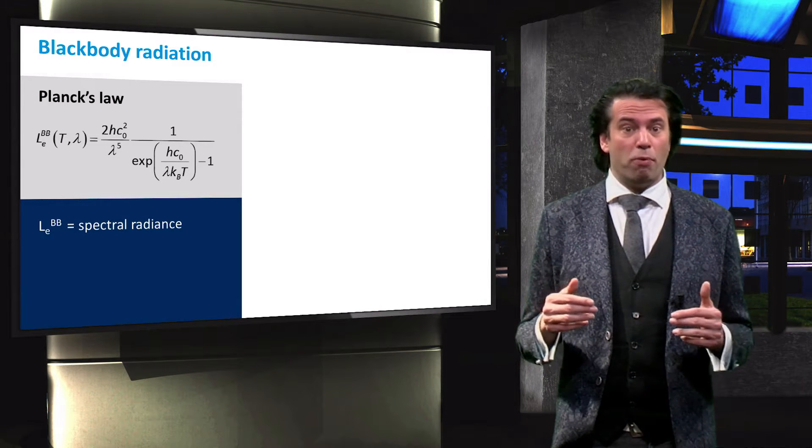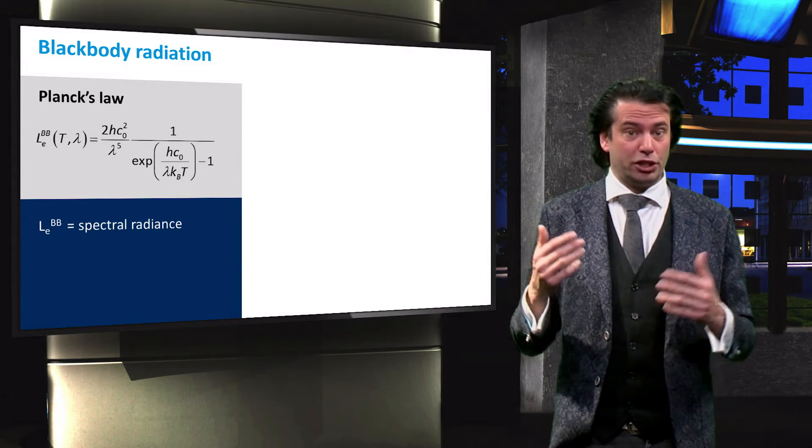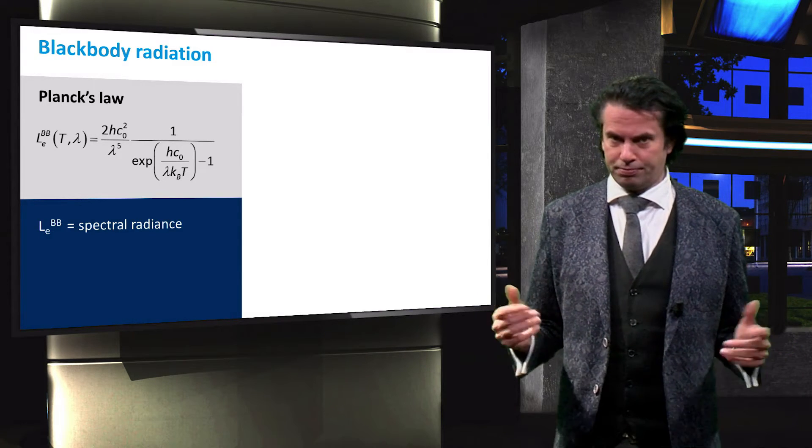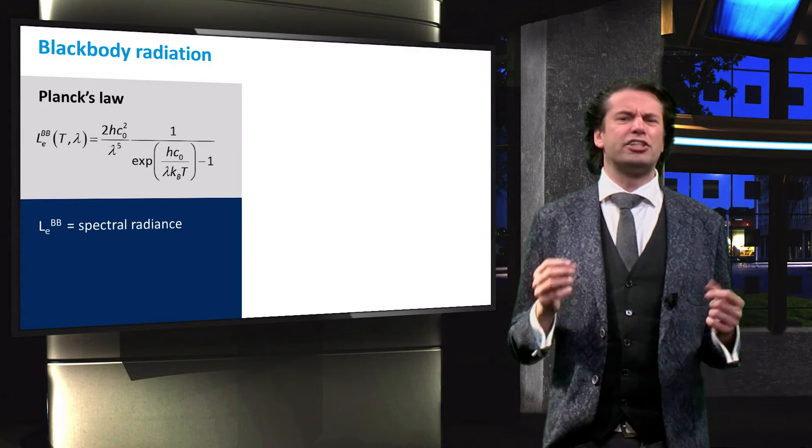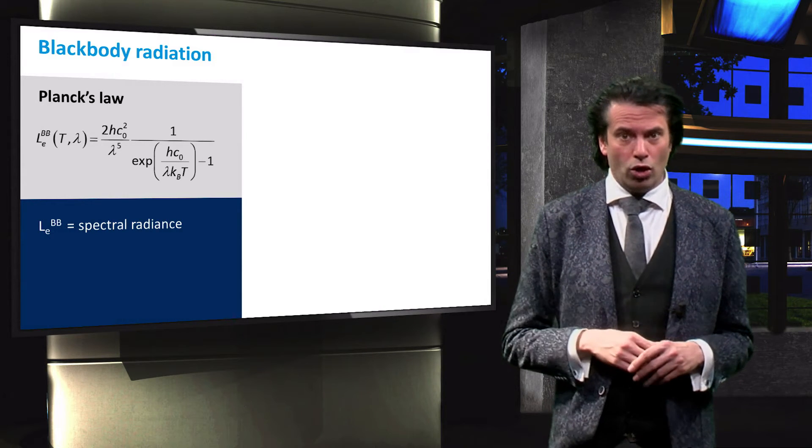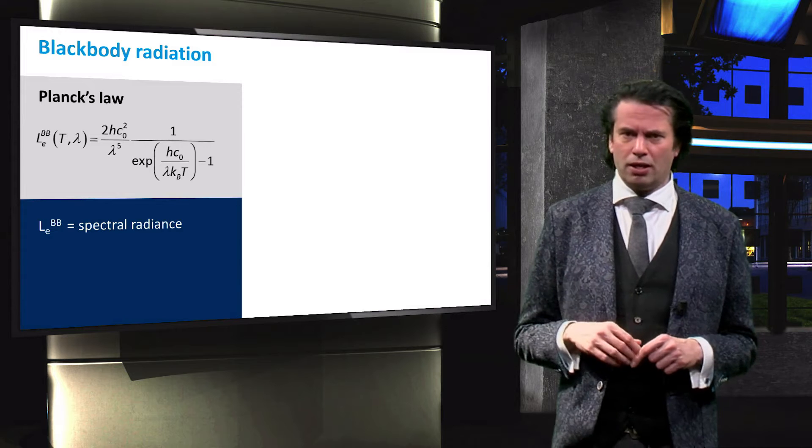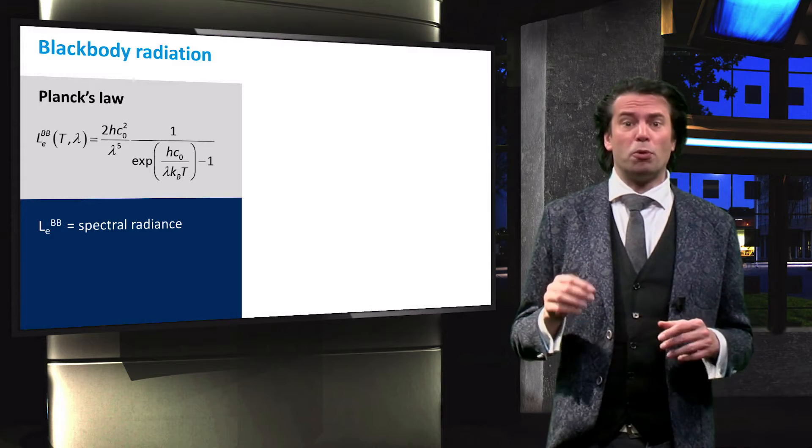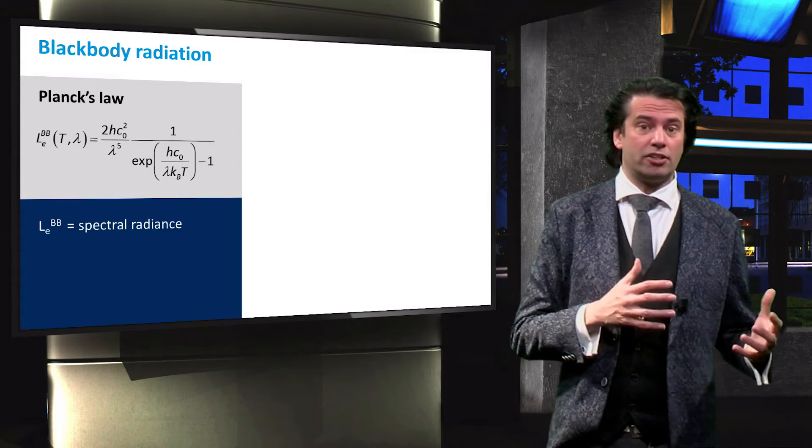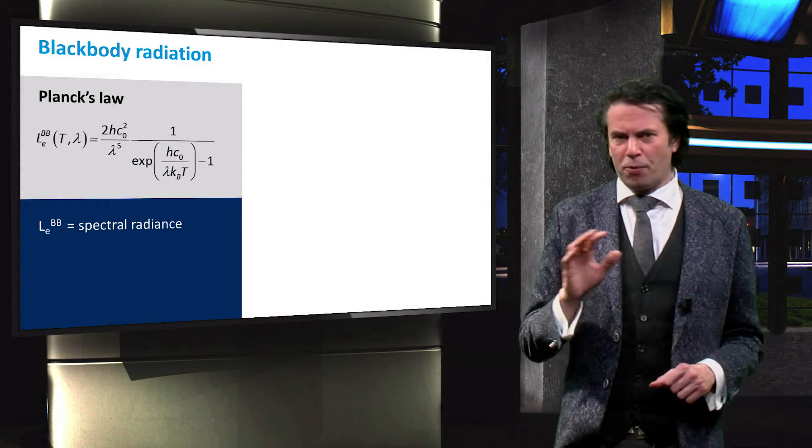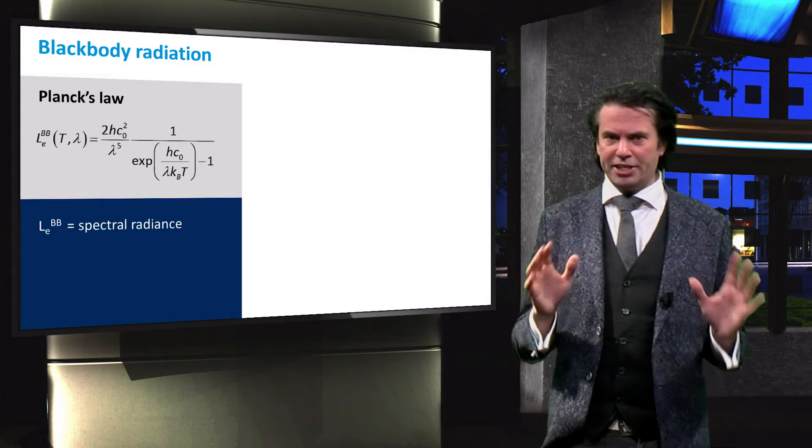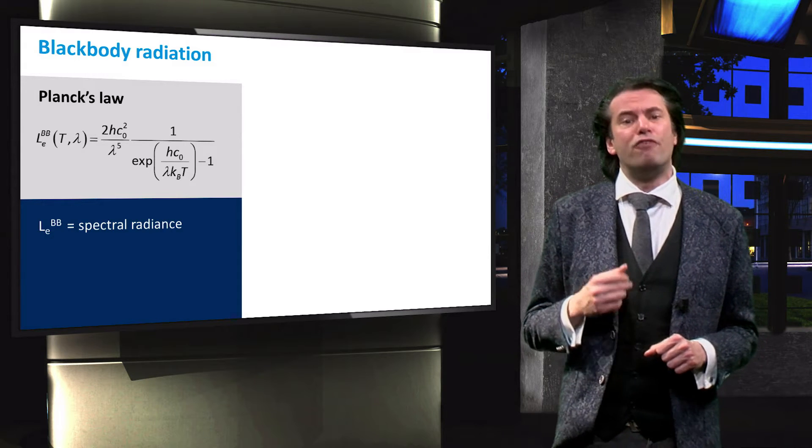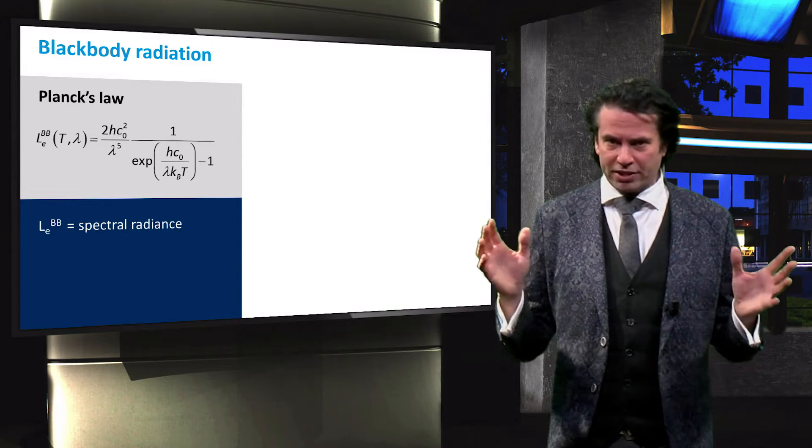A body with a temperature above absolute zero emits electromagnetic radiation. The spectral radiance of such a body is described by Planck's law, which is shown here. Planck's law assumes that the body is a black body. A black body absorbs all the radiation that is incident on it. A perfect black body does not exist in nature, but planets and stars are close enough for Planck's law to give a very good approximation of the spectral radiance.